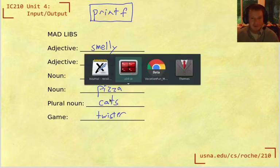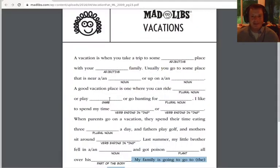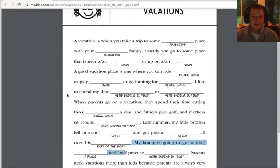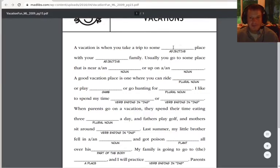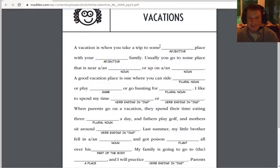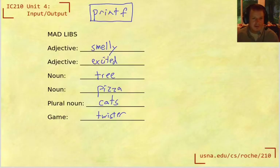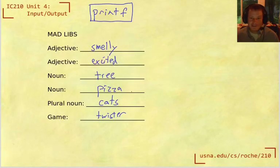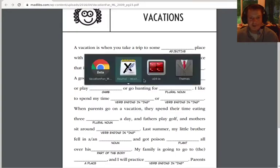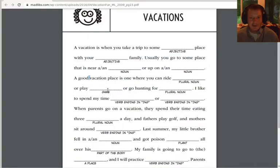So those are the things that I filled in now. And the way that the Mad Libs game works is that you then insert these into some blanks in a story that you haven't seen before. And it's supposed to be fun for kids to play. So in this case, we would say a vacation is when you take a trip to some smelly place with your excited family, usually you go to some place that is near a tree or up a pizza. That doesn't make sense. A good vacation place is one where you can ride cats or play twister or go hunting. Okay, so that's how this game works. It's a fun game for kids to play and to learn parts of speech.